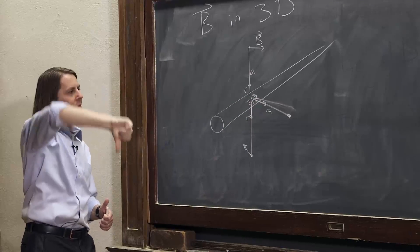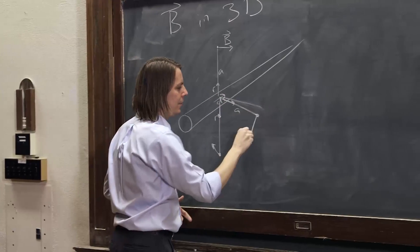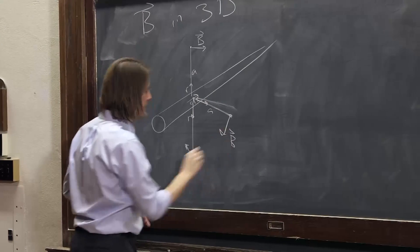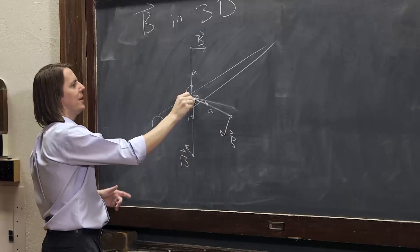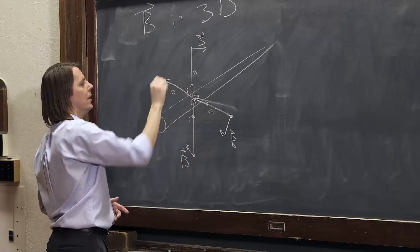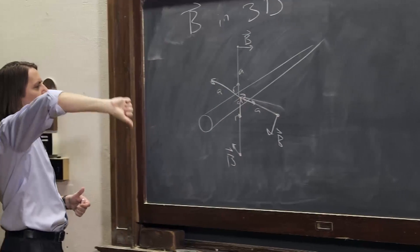Now R is going this way, out. DS cross R would be down. There's B. And if we went back this way at distance A, there's R. DS cross R would be up.